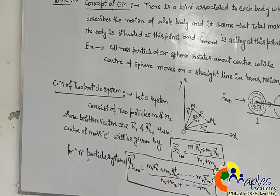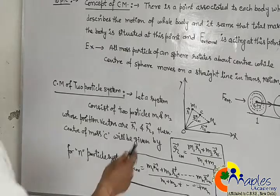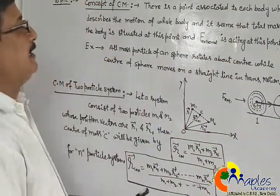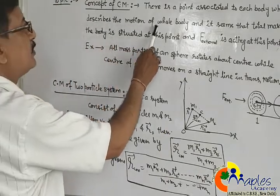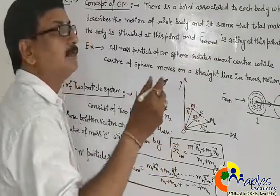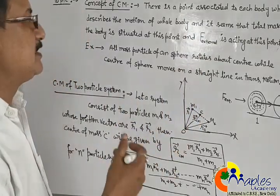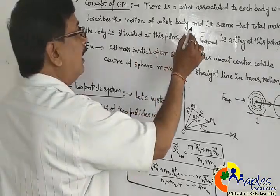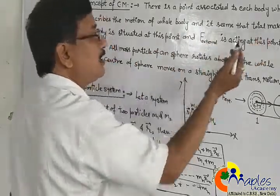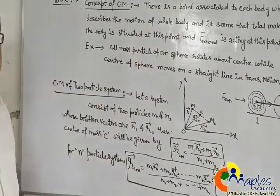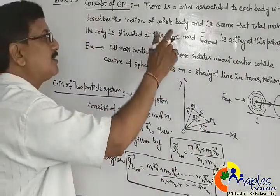The Concept of Center of Mass means there is a point associated to each body which describes the motion of the whole body. It will explain which type of motion - one-dimensional, two-dimensional, translatory, rotatory, whatever. And it feels that the total mass of the body is situated at that point.